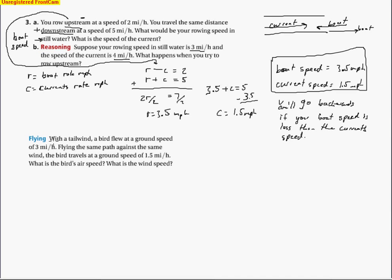So let's take a look at this next one. So with a tailwind, a bird flew. Okay, so a bird is the same thing as the airplane type problem, which is the same as the boat problem as well. So with the tailwind, the bird flew at a ground speed of 3 miles an hour. So let's go ahead and define some variables. We'll go with r equals the bird's speed in miles per hour again. And we'll say that we'll go with w equals the wind speed. And this is also in miles per hour. So going with the wind, because it's a tailwind, it's r plus w. So tailwind means plus. So r plus w equals 3.